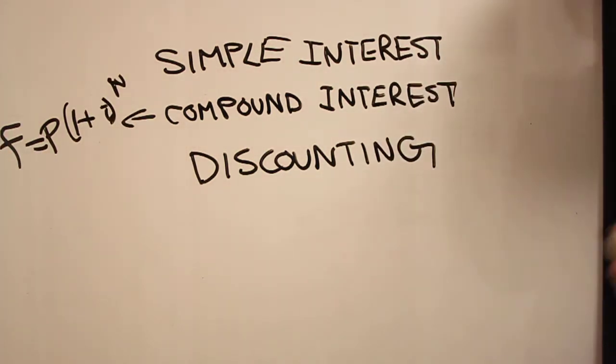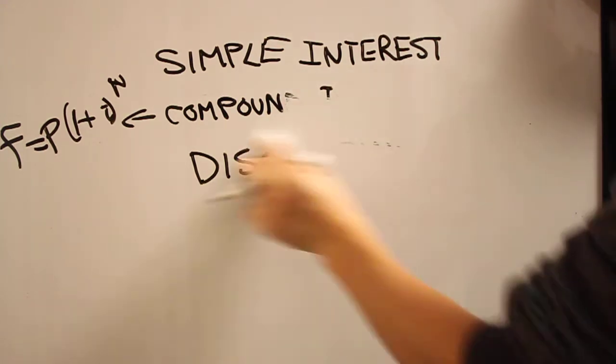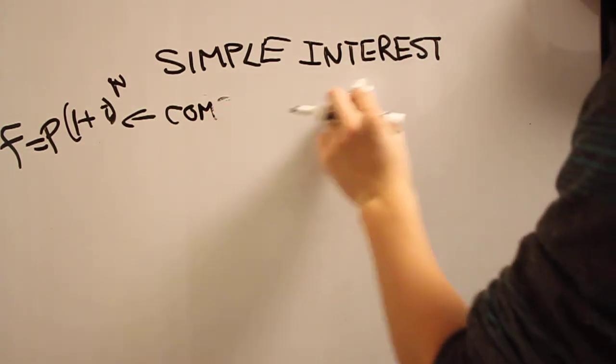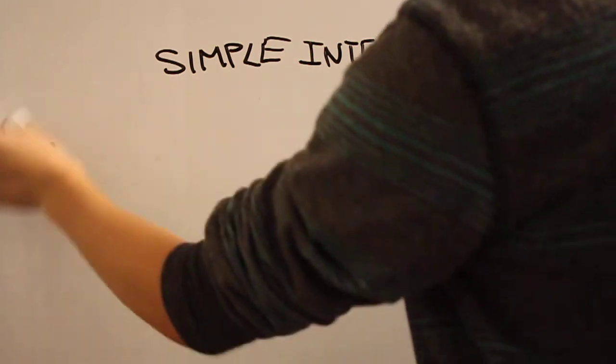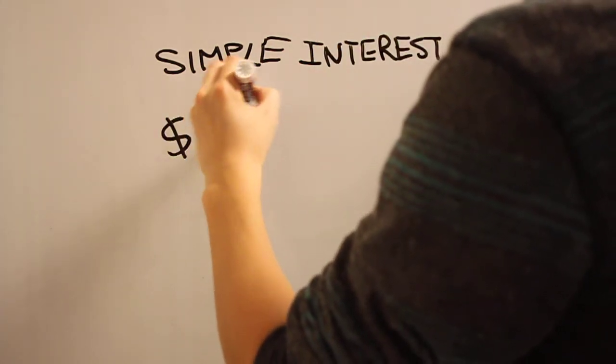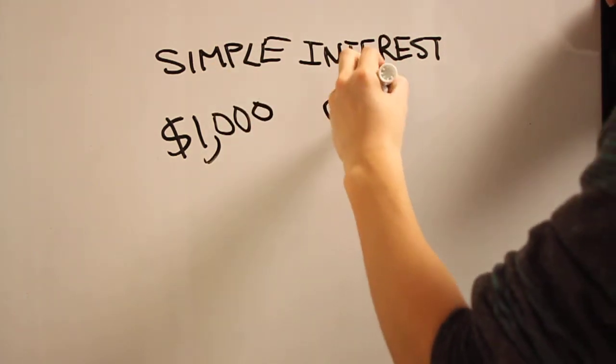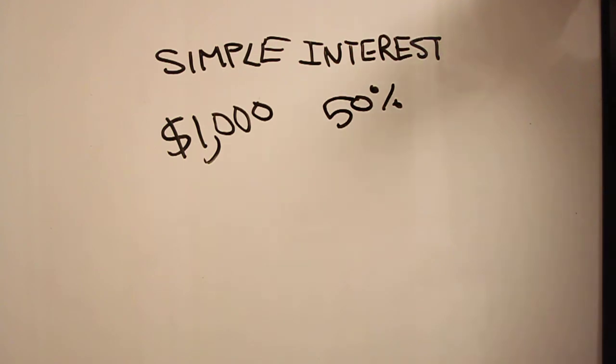Before we move on, we're going to look at a simpler version of this and see how the math changes there. Remember from our first example, we used $1,000 put into a bank with 50% interest rate, which is ridiculous, but it helps for our purposes of doing simple math.